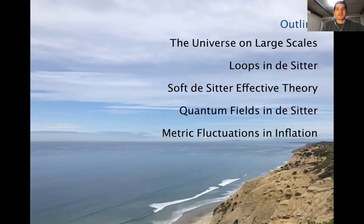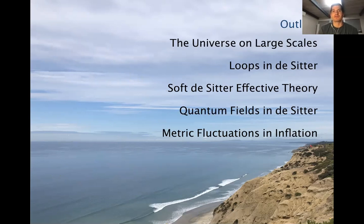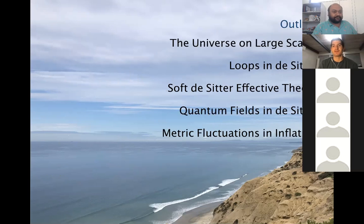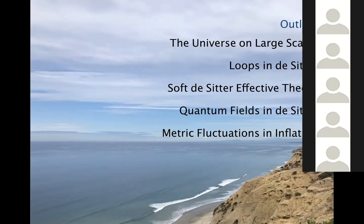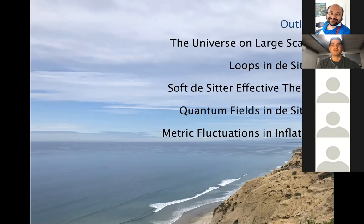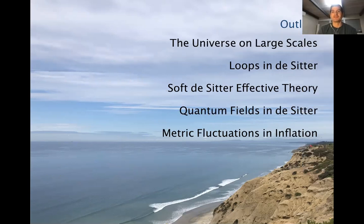Soft de Sitter effective theory is meant to address the problem of understanding the universe on scales much larger than the horizon, particularly for de Sitter. To introduce that problem, we're going to discuss loops in de Sitter space. This is a topic that has a long and mostly unfortunate history of confusion and disagreement in the literature.